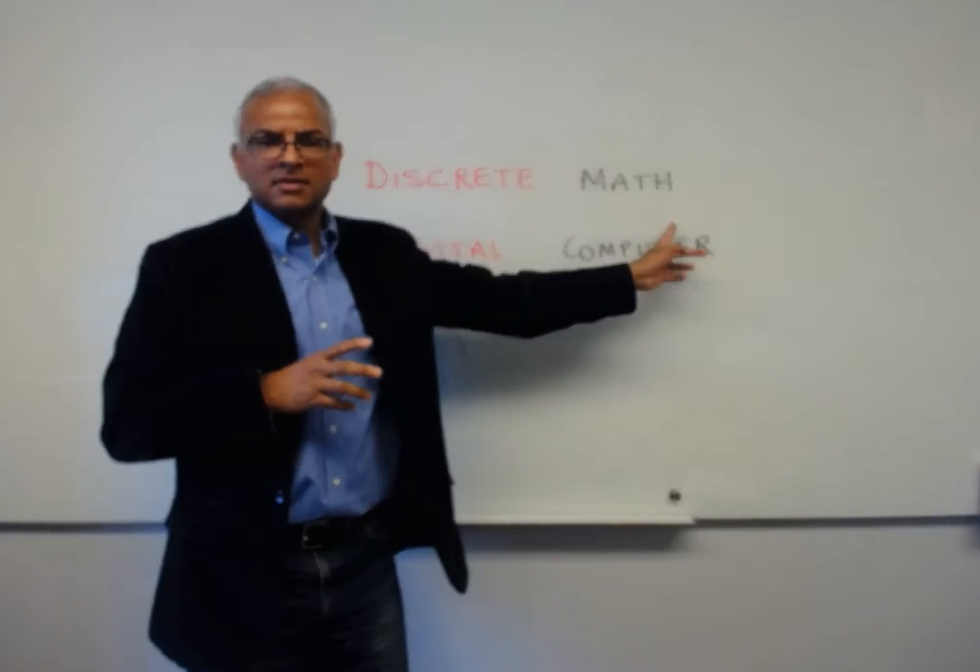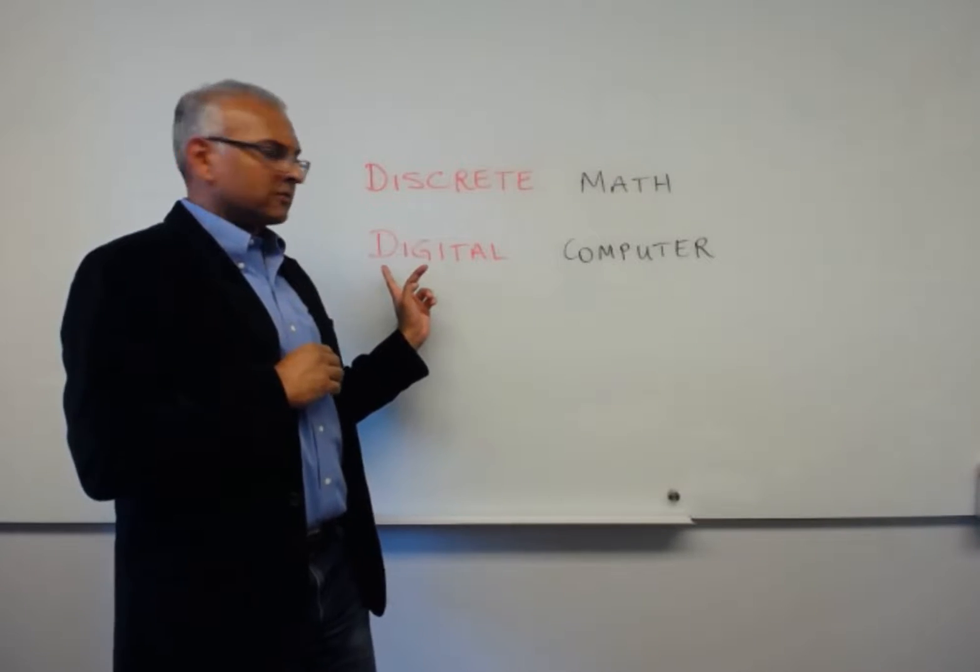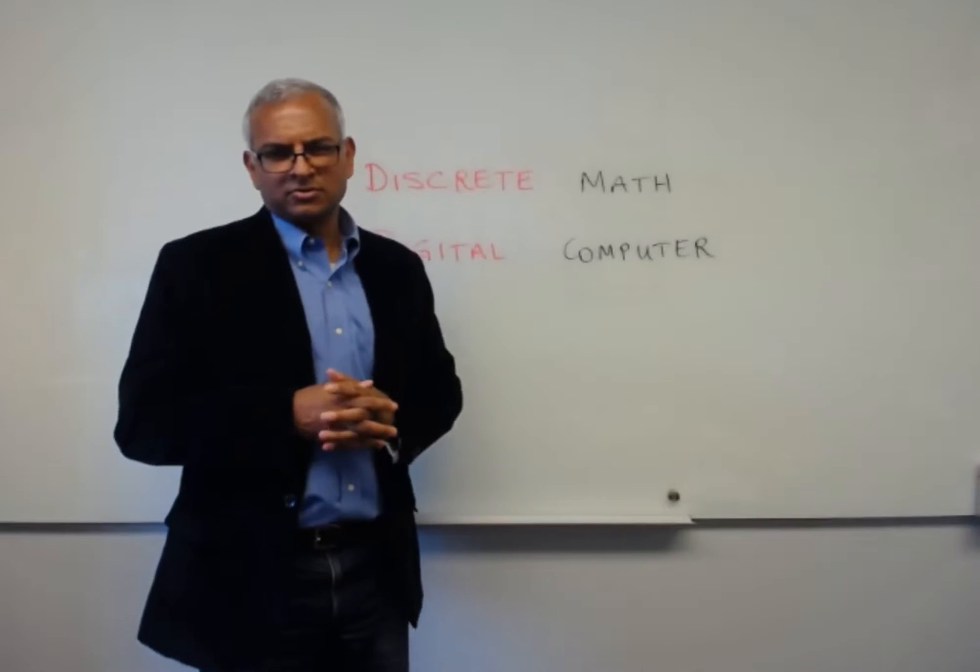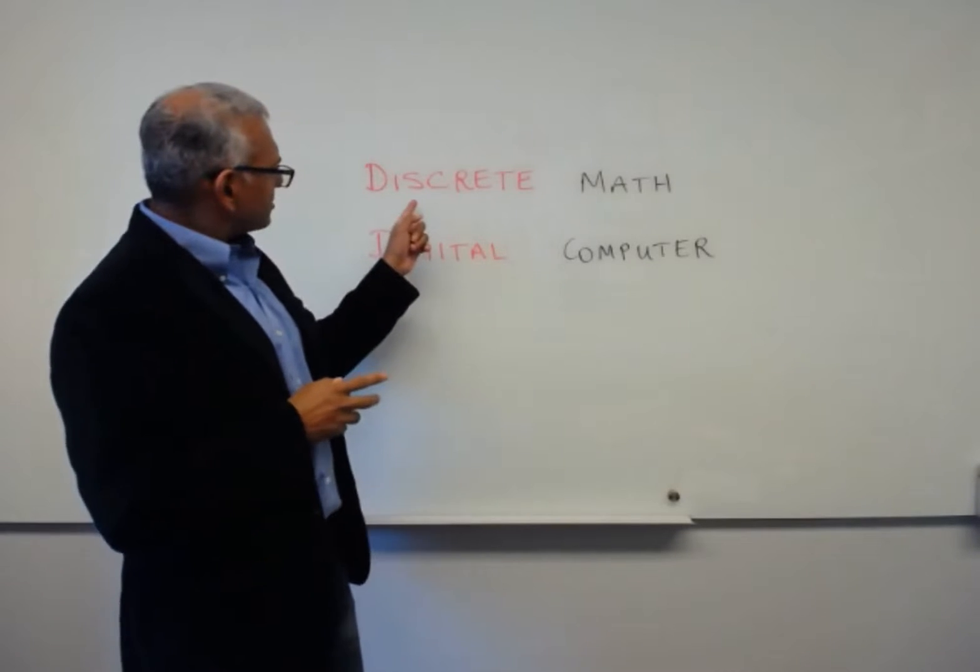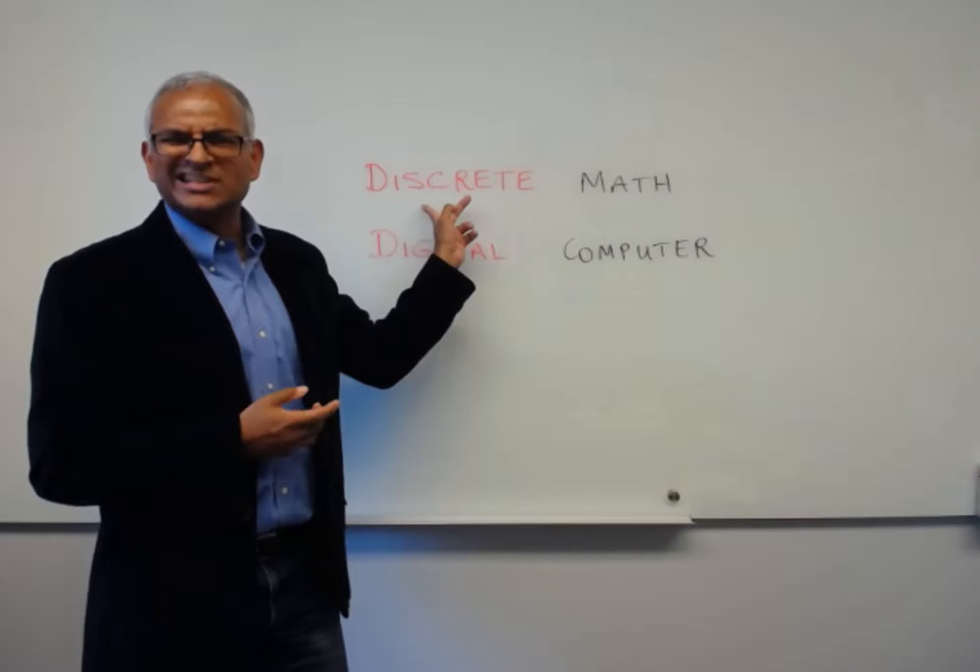So we've got discrete math and we're going to apply it to developing a theory of the digital computer. This we usually call the theory of computing. In fact, discrete and digital almost mean the same thing. We could almost call this course digital math.